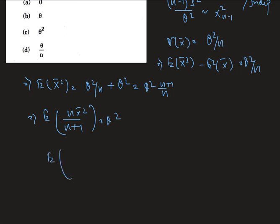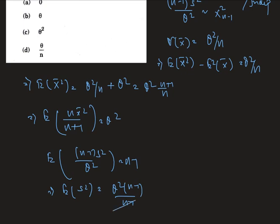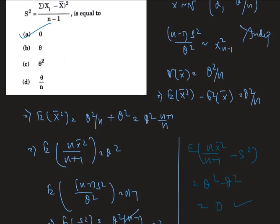The expected value of (n-1)*s² divided by θ² equals (n-1), therefore E[s²] = θ²*(n-1)/(n-1) = θ². Therefore, the expected value of n*x̄²/(n+1) minus s² equals θ² minus θ², which results in 0. So (a) is the right answer.